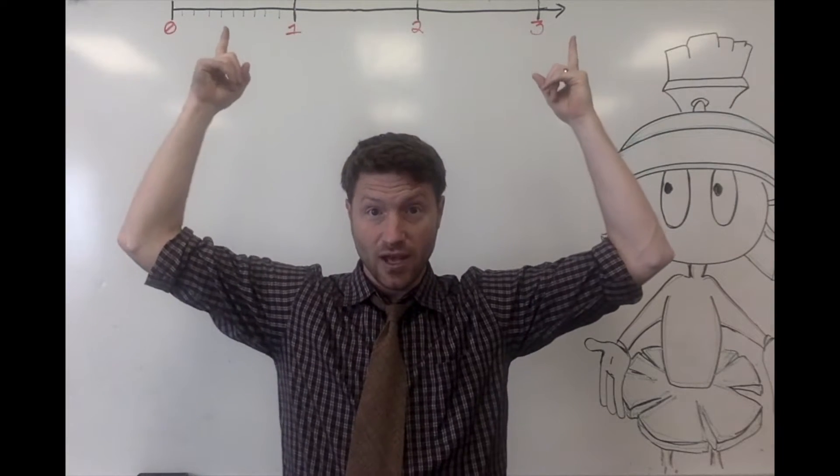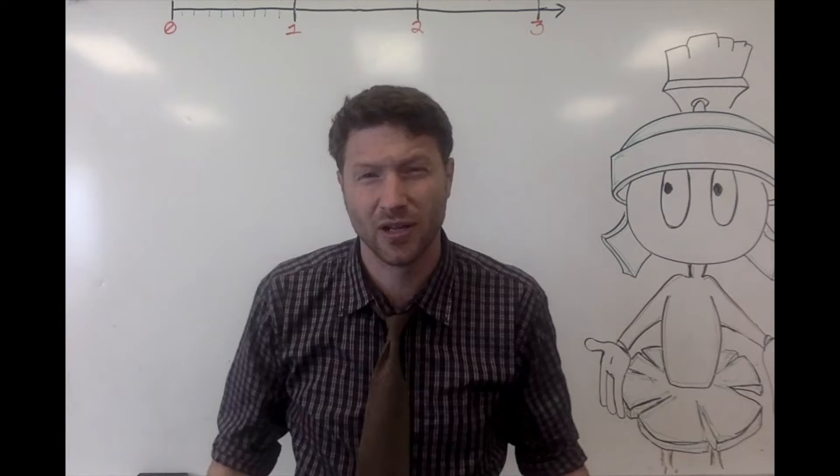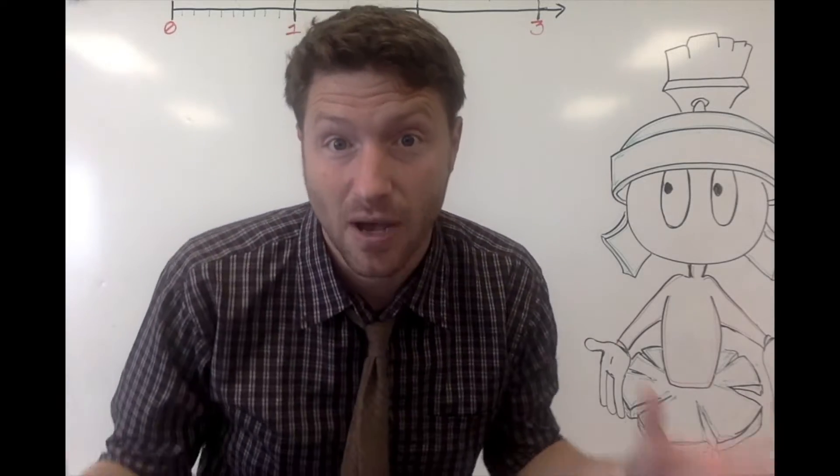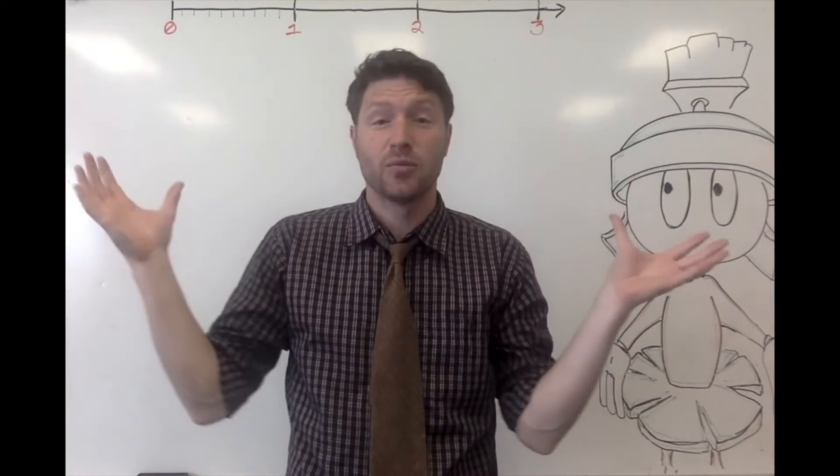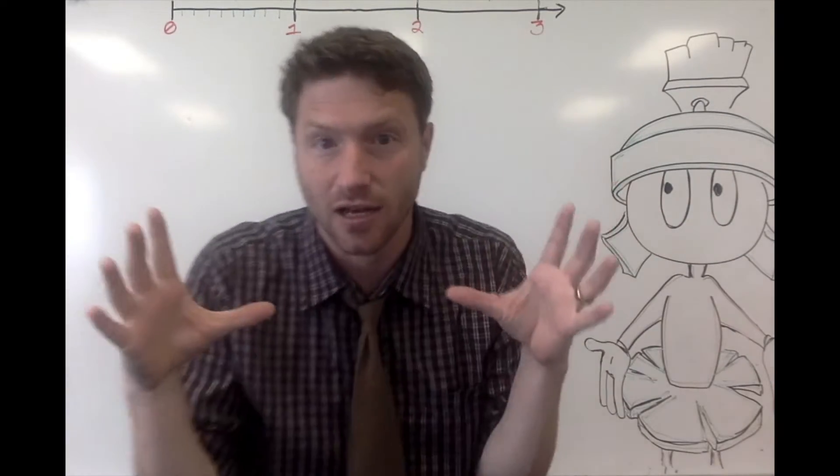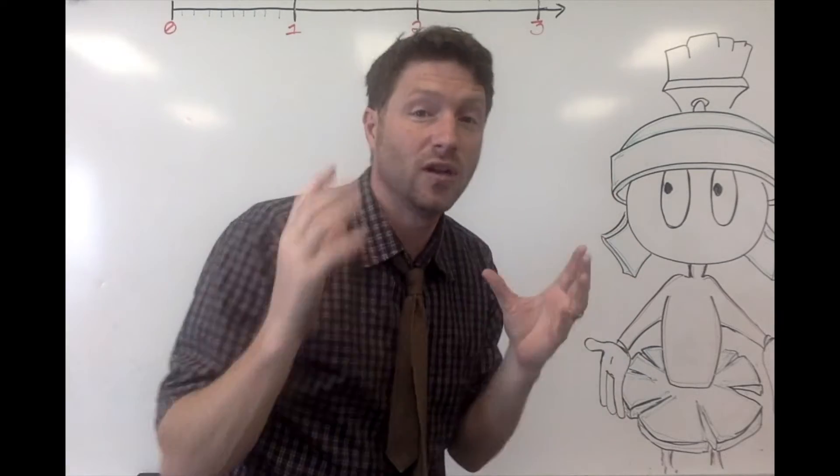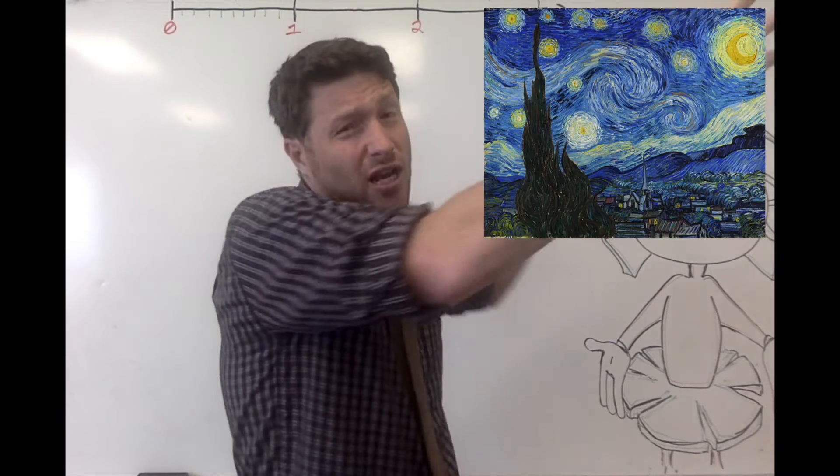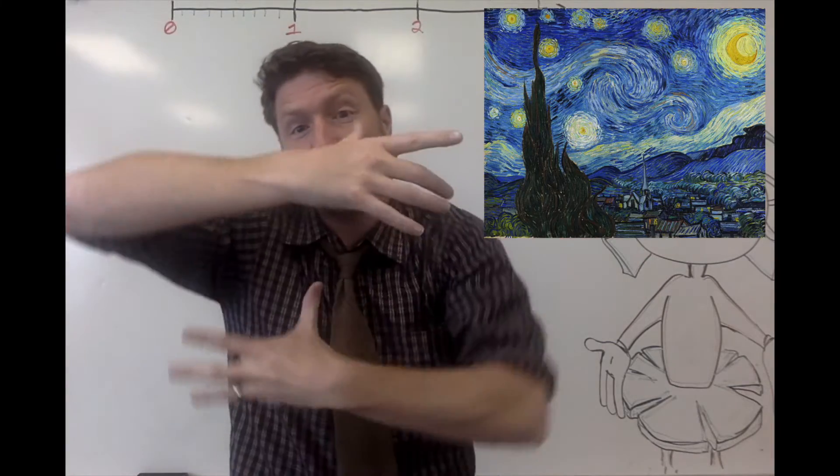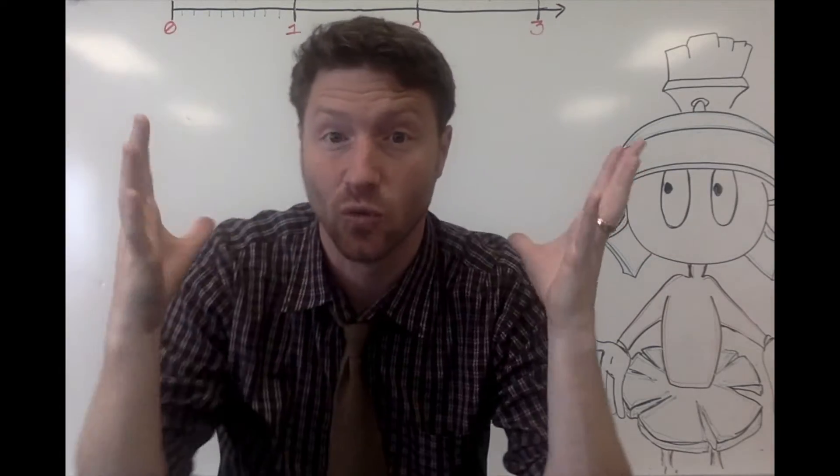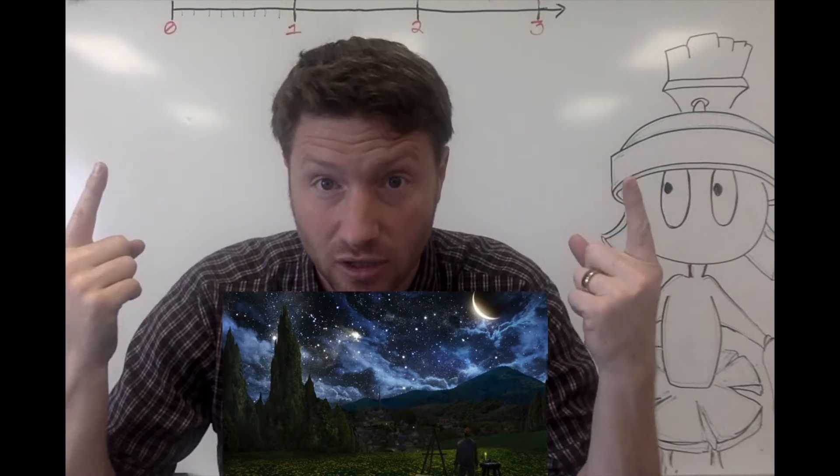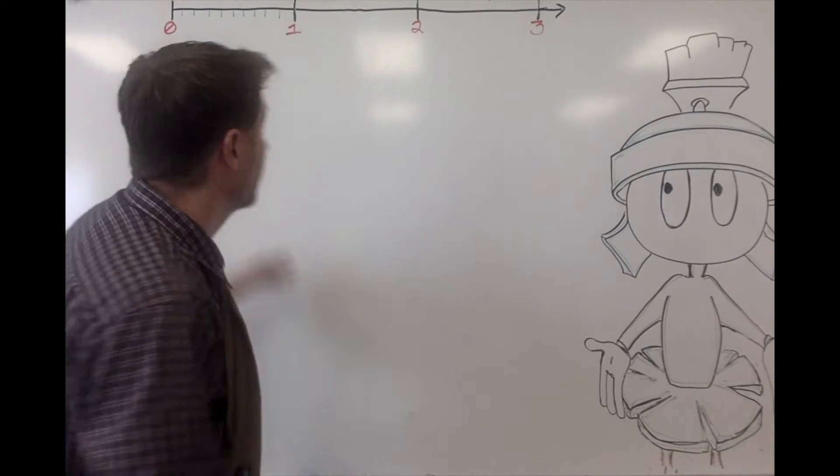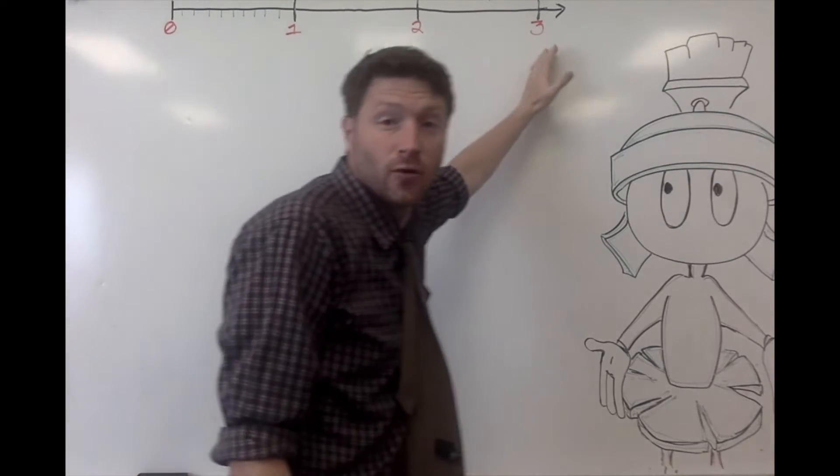Up here, we have our number line. We are going to talk about number lines and units. The amazing thing about math is all math is abstract, theoretical, until you take it and put a unit of measurement on it. Putting a unit of measurement on your math takes it from the abstract and brings it into the actual physical world of reality. Right now these are feet. We have one foot, two foot, three foot.